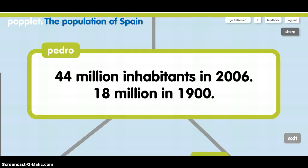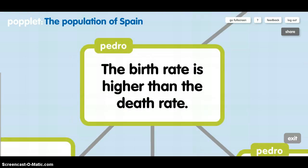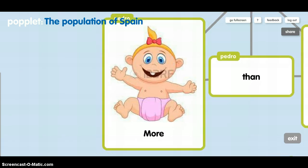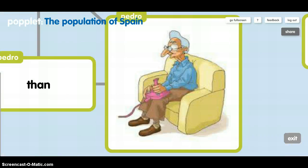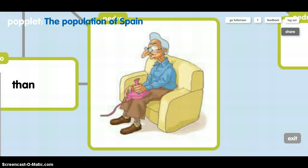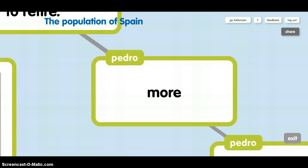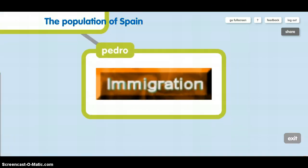Spain's population was 44 million inhabitants in 2006 and 18 million in 2019. The birth rate is higher than the death rate. Many immigrants have come to Spain to work already, resulting in more immigrants.